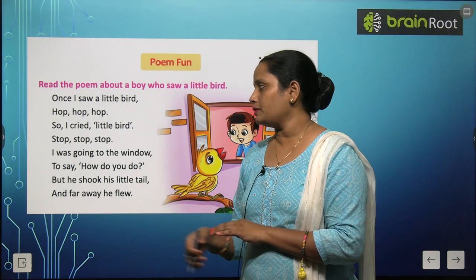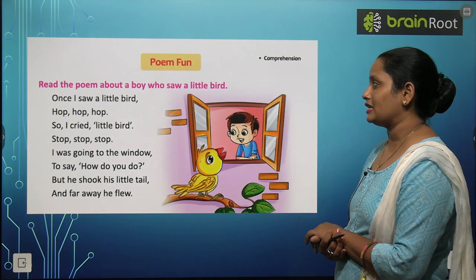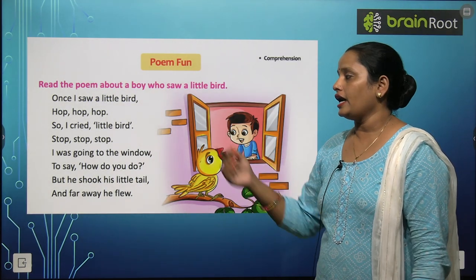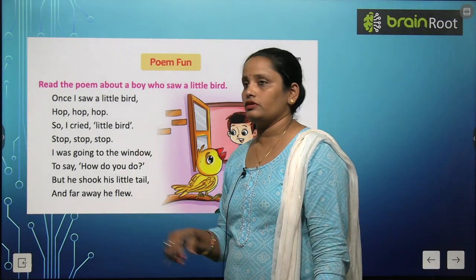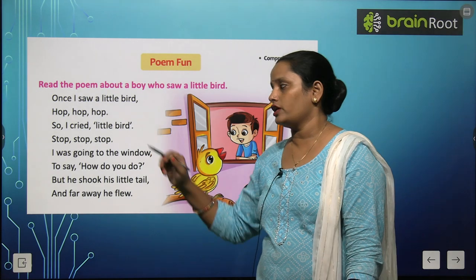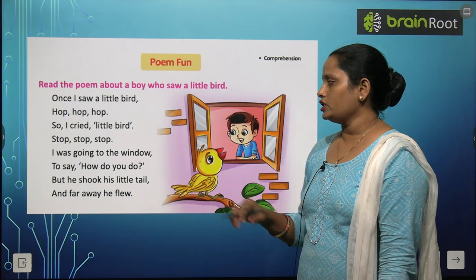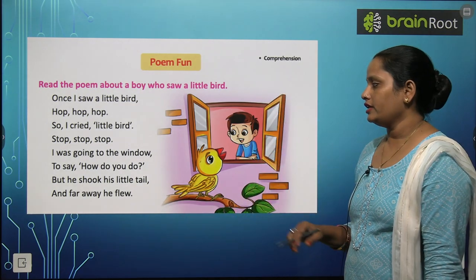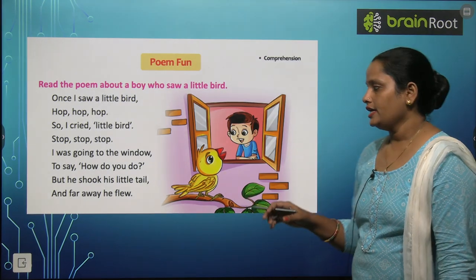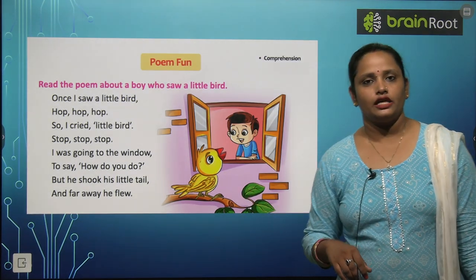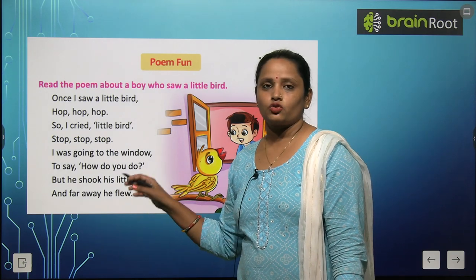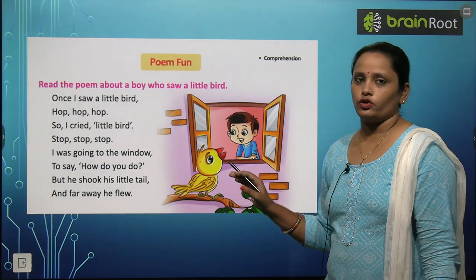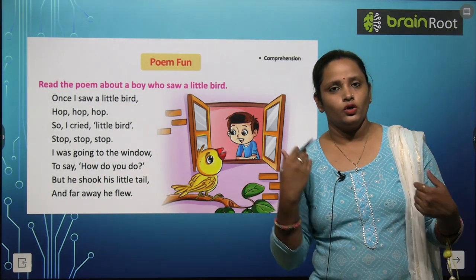I cried, Little bird, stop, stop, stop. Ek baar maine ek choti si bird dekhi jo hop kar rahi thi. Maine chillaya — Little bird. I was going to the window to say how do you do? But she shook her little tail and far away it flew. Main apne window ke paas gaya, socha puchu — tum kaise ho? Lekin woh bird apni choti si pooch hilakar ud gayi.